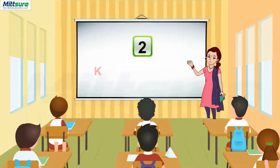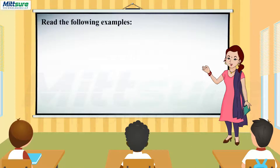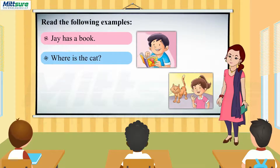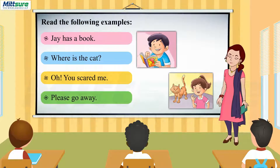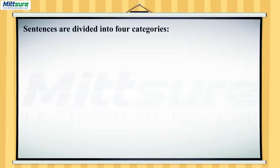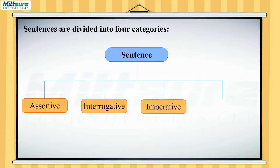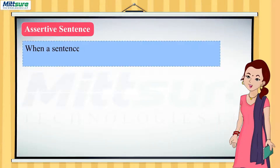Chapter two: kinds of sentences. Read the following examples: Jay has a book. Where is the cat? Oh, you scared me. Please go away. Sentences are divided into four categories: assertive, interrogative, imperative, and exclamatory.